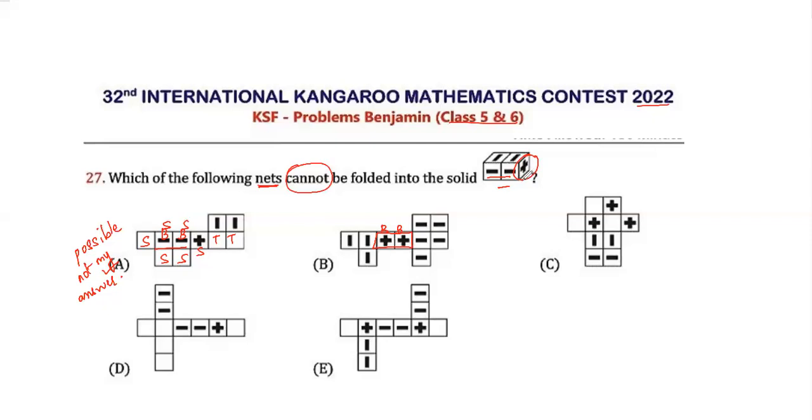So if I take this as the base, you know the plus sign has come at the bottom. So this is not my answer, as in this is not possible. What we could also check, suppose if I take this as the bottom, okay?